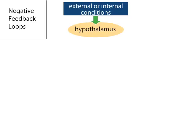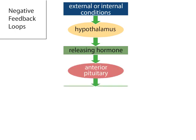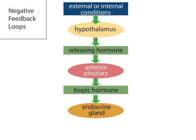The hypothalamus initiates a chain of events that controls the endocrine system. It releases hormones that trigger the anterior pituitary to release more hormones, which in turn control a variety of endocrine organs, such as the adrenal glands. Although the hypothalamus drives the system, it is kept in check by a negative feedback loop.